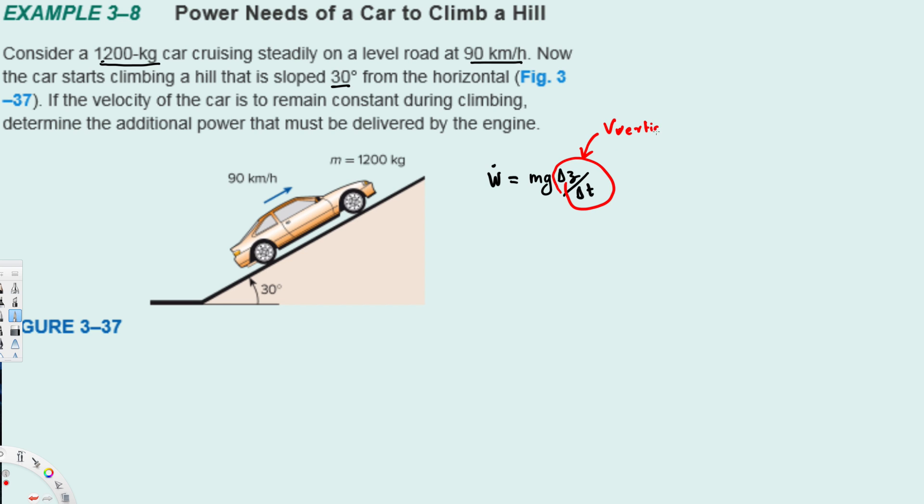If we calculate v vertical, that's going to be the velocity due to the height. To do that, we have to take the vertical component. We know that cosine 30 is horizontal and sine 30 is the vertical component.